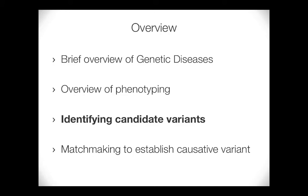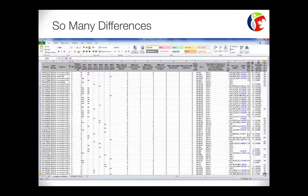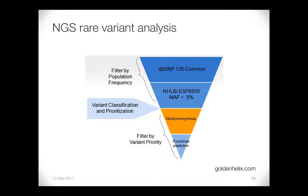Now I want to talk about how we identify a causative variant. When you sequence a patient's genome for a rare disease you're looking at millions of variants. You can use different tricks to narrow them down. You can filter out common variants — if a variant is present in more than 1% of the common population, throw it out. We also typically look for non-synonymous, stop-gain, or splicing variants — variants thought to have a larger impact — and throw out synonymous variants, though that's not strictly the right thing to do since synonymous variants have been known to cause disease.